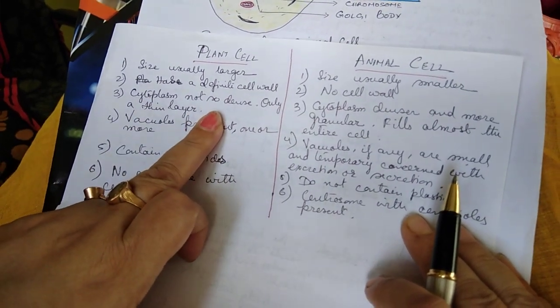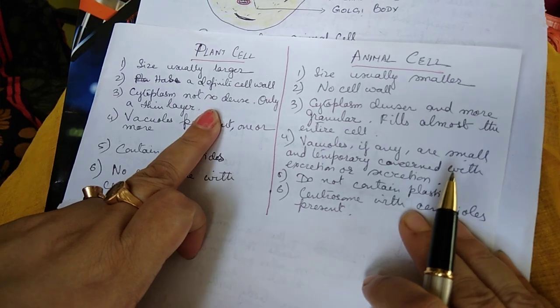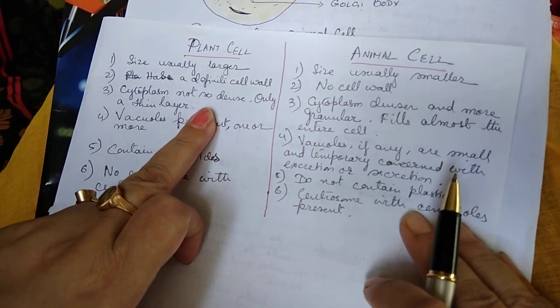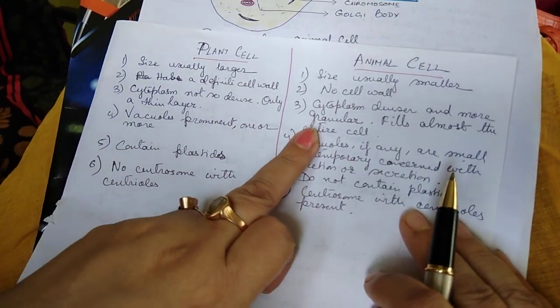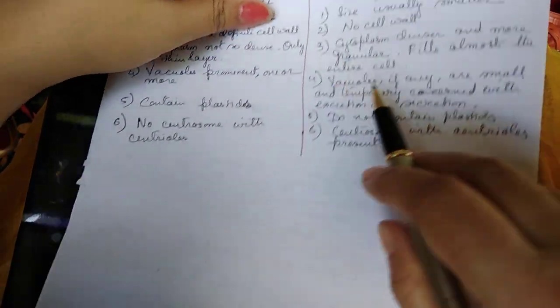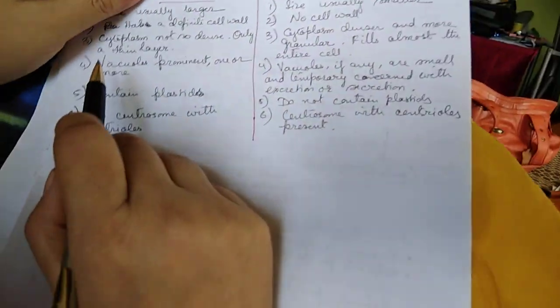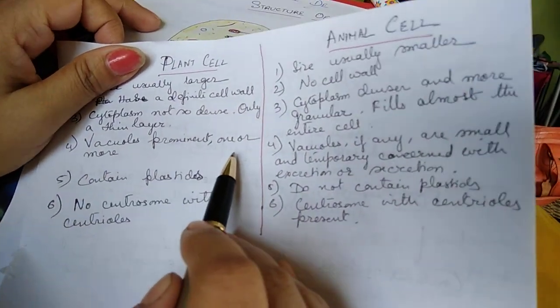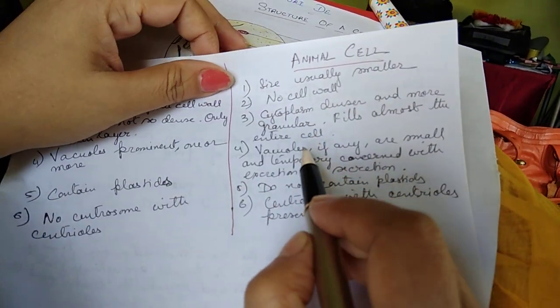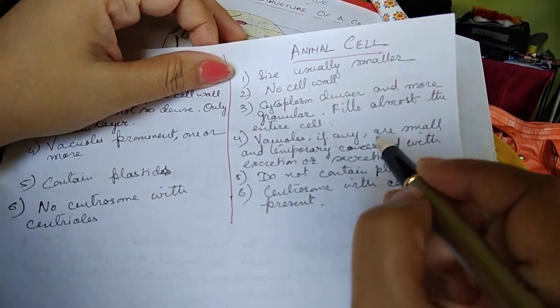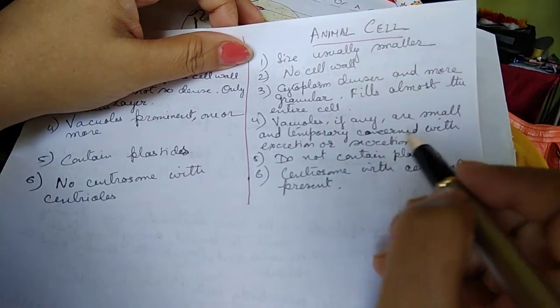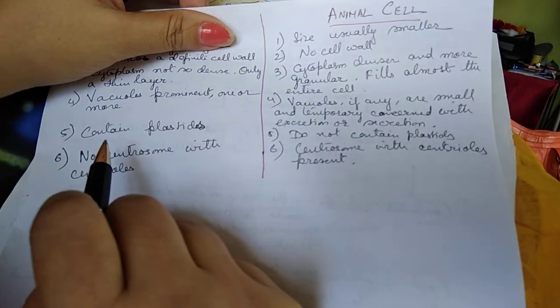Cytoplasm: it's not so dense, only a thin layer of cytoplasm is found in plant cells. But in animal cells cytoplasm is denser and more granular, fills in almost the entire cell. Plant cell vacuoles: one or more vacuoles present. In case of animal cells they are very small or temporary, concerned with excretion or secretion.